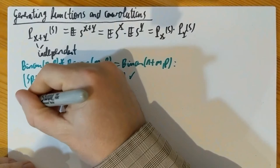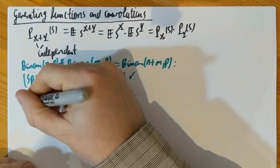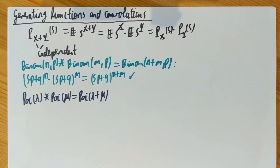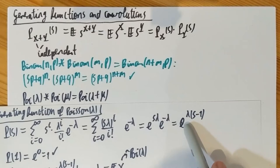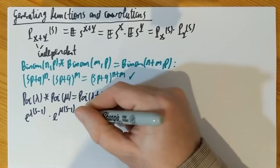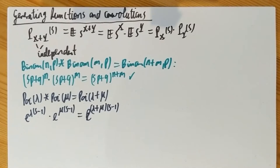I can do the same with the Poisson. Poisson(λ) convolved with Poisson(μ) is Poisson(λ+μ). Why is that? The Poisson distribution has generating function e to the λ(s−1). So if I multiply together e to the λ(s−1) with e to the μ(s−1), I get e to the (λ+μ)(s−1), according to the convolution property of generating functions.